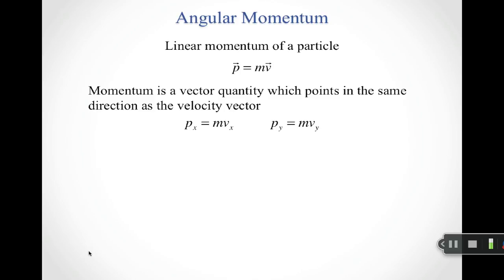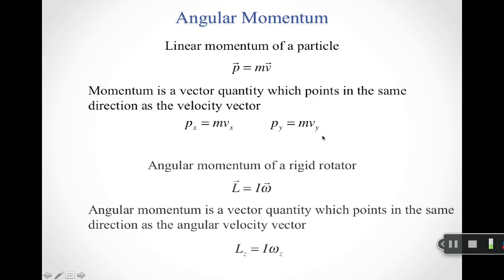Linear momentum is given by mass times velocity. This is a vector equation, so linear momentum p is a vector quantity that points in the same direction as the velocity vector. In two dimensions, I can break this into two equations: the x-component of linear momentum is mass times x-component of velocity, and the y-component of linear momentum is mass times y-component of velocity.